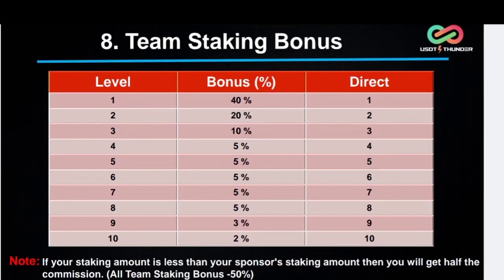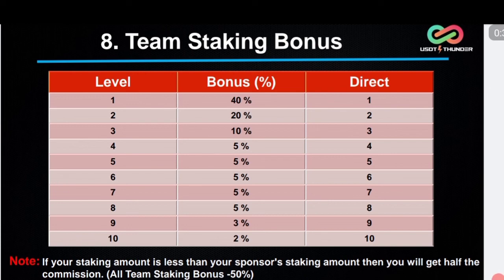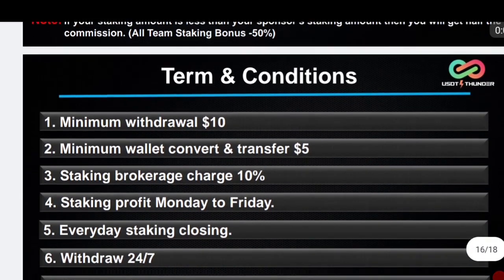Loyalty bonus is released on a weekly basis. To get rank loyalty bonus, you must refer at least one person weekly. Next: team staking bonus. If your team starts staking, you will get team staking bonus. From your first level you get 40% of their staking bonus, second level 20%, third level 10%, and likewise up to your 10th level you get 2%. Certain conditions apply: for first level you need 1 direct, for second level 2 directs, and to get team staking bonus from all 10 levels you need at least 10 directs. If your staking amount is less than your sponsor's staking amount, you will get only 50% of the staking bonus.